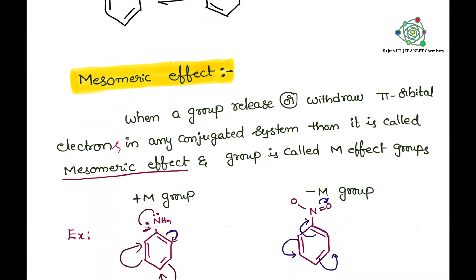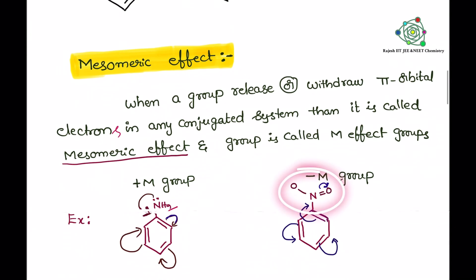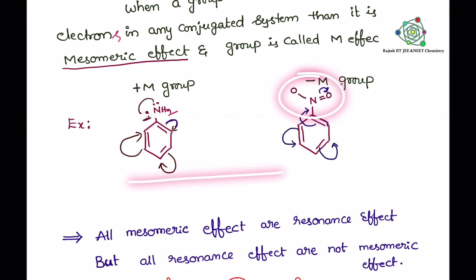You see in this example, plus M group I attached to the benzene ring, so here that is NH2. Here electrons movement, you see they are moving in the clockwise. Pi electrons moving in the clockwise. Now coming to the minus M group, NO2 group I attached to the benzene ring, so movement is in anti-clockwise. That means pi electrons movement is influenced by any group, then that is called as mesomeric effect.